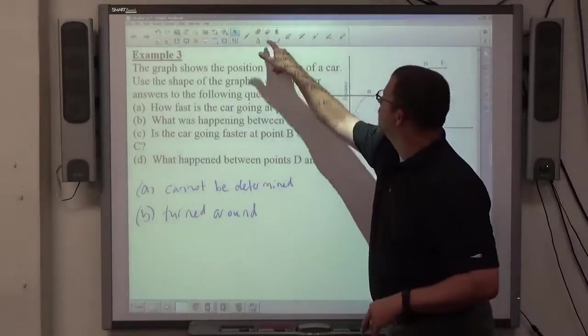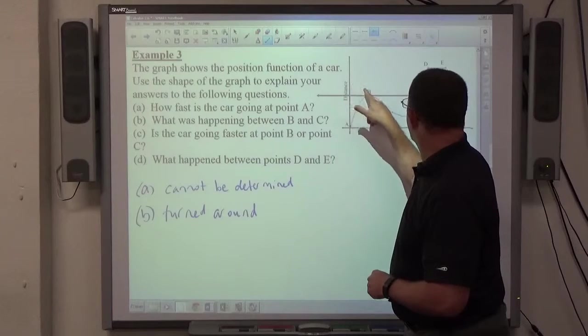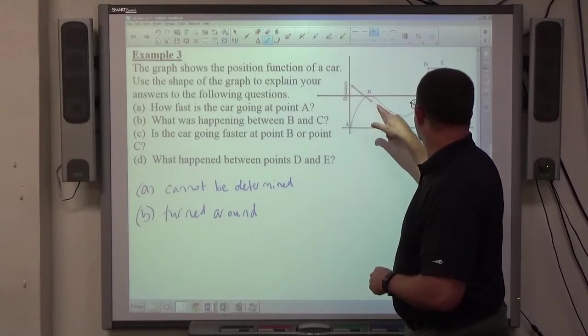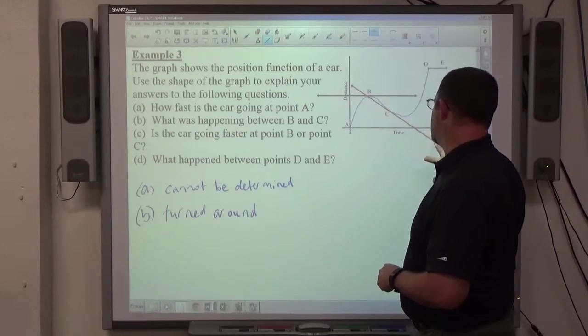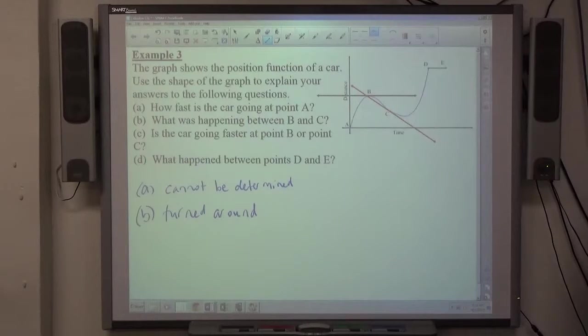C, on the other hand, looks like, here's C. There's C's tangent. So, it's C. So, I can see that he's going faster at point C. And point B is where he stopped to turn around.